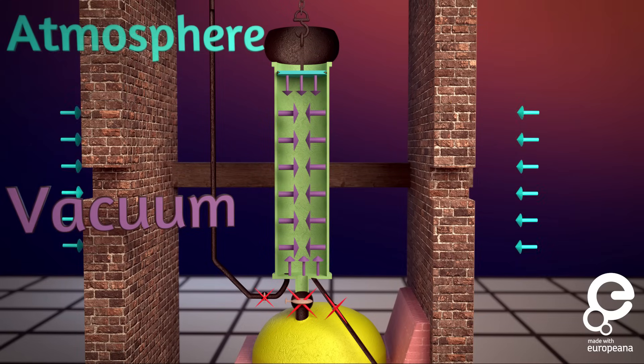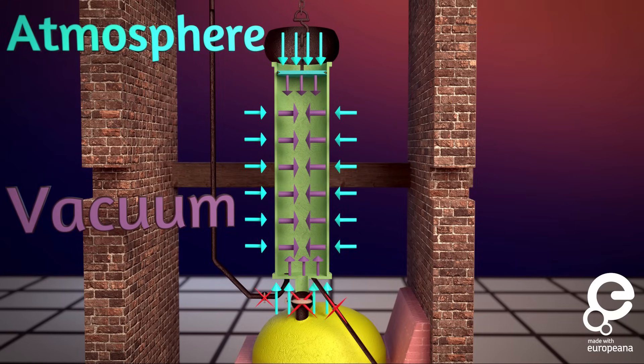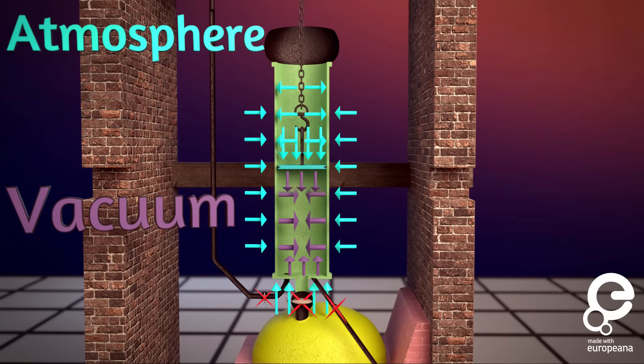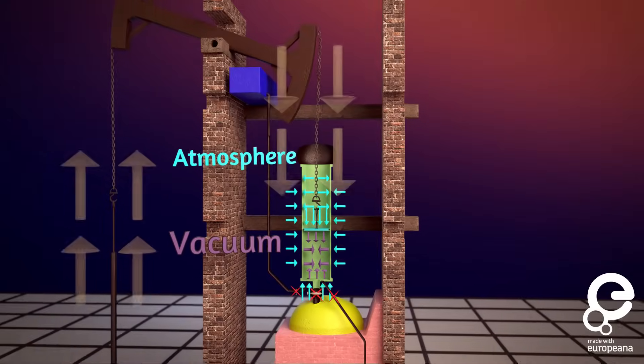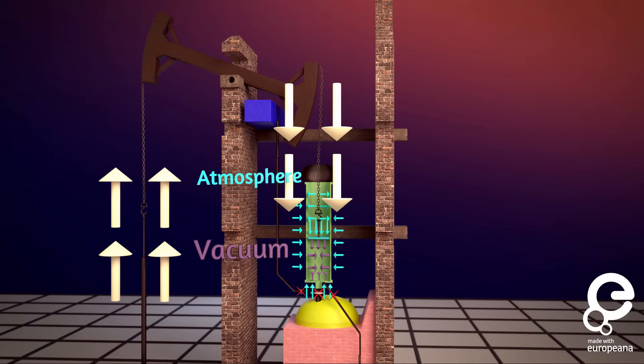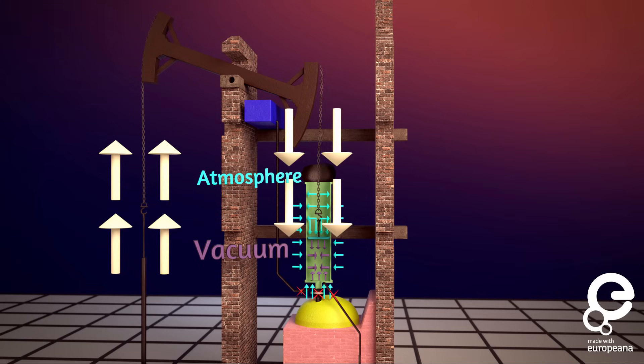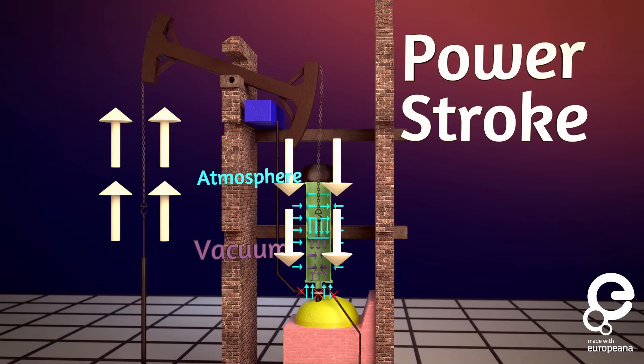With pressure from the atmosphere above the piston, and a vacuum below, the piston is pushed down and power is produced. The motion is then transferred through the balance beam and used at the pump side to move water out of the mines. This part of the cycle is named the power stroke.